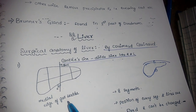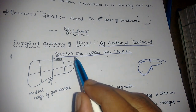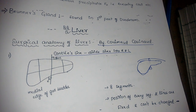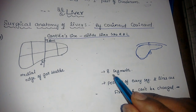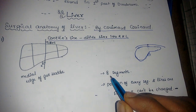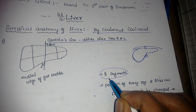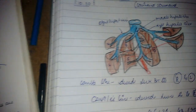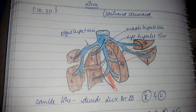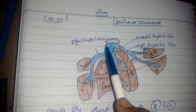Let's divide this whole liver into segments — total there are eight segments. Let's see how these eight segments are divided. If you see this diagram, this is the inferior vena cava.